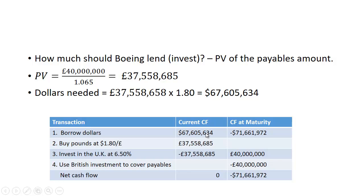So Boeing borrows $67,605,634 — that's a positive cash flow. At maturity, they repay the loan at 6%, so 1.06 times that amount is what they will owe. They buy pounds at $1.80 and receive 37,558,685 pounds. They invest those pounds at the UK rate of 6.5%, which grows to 40 million at the end of the year. They use that 40 million to cover their payables, locking in a cost of $71,661,972.